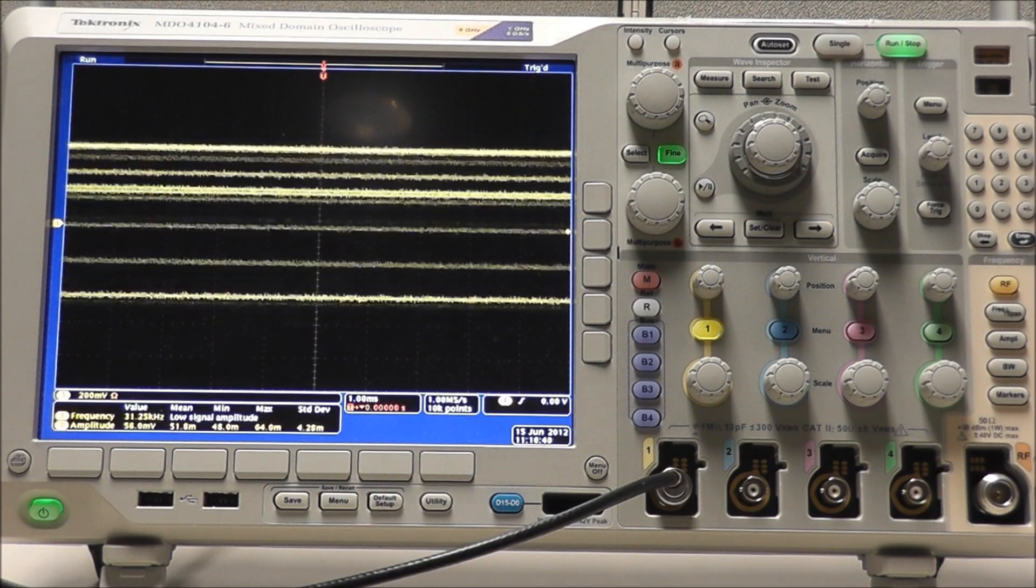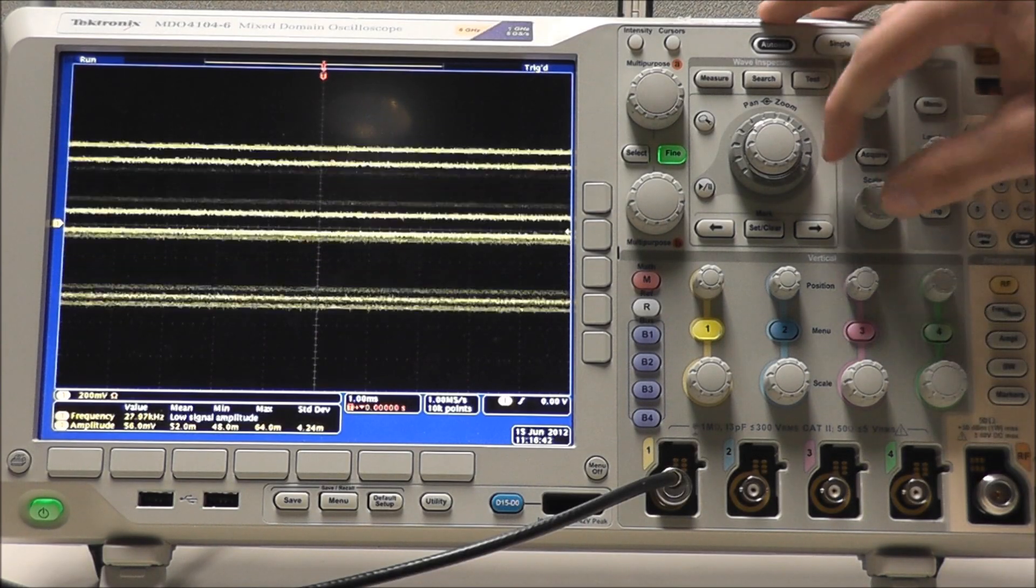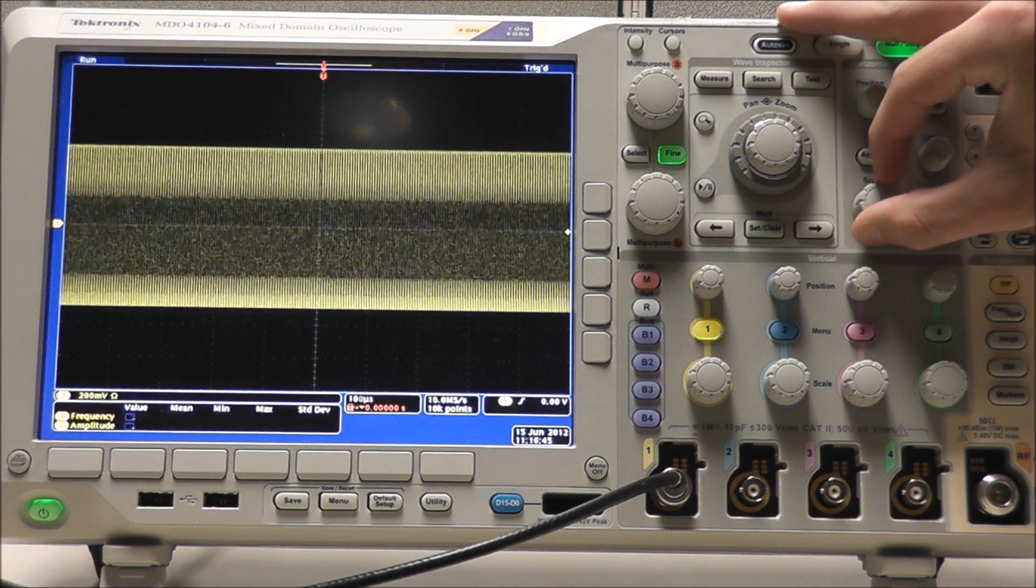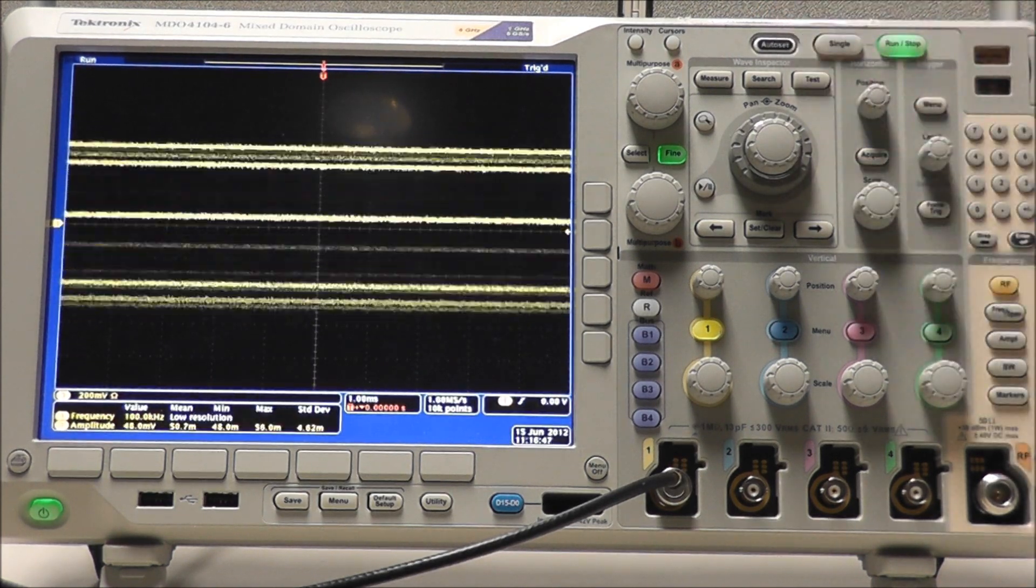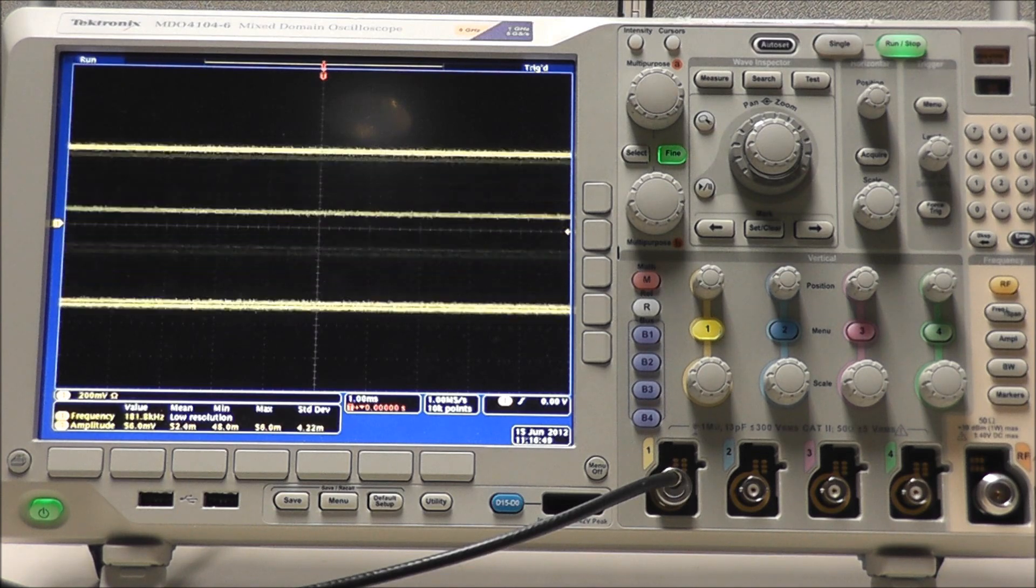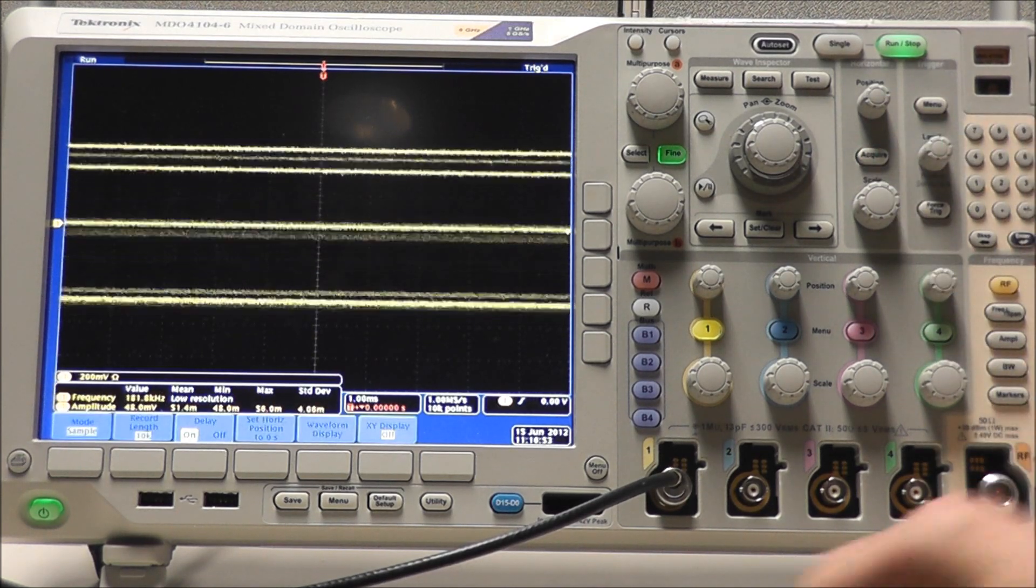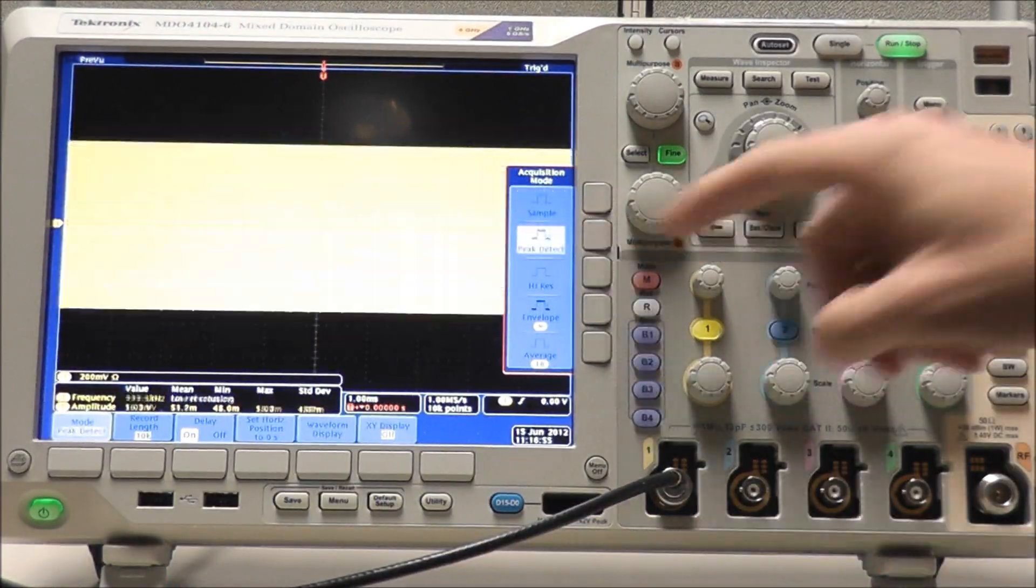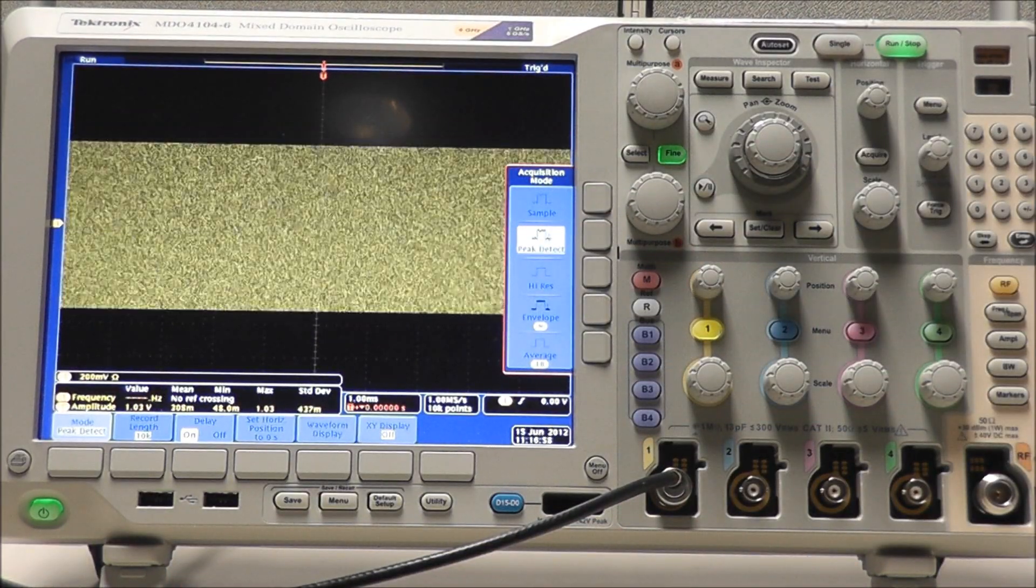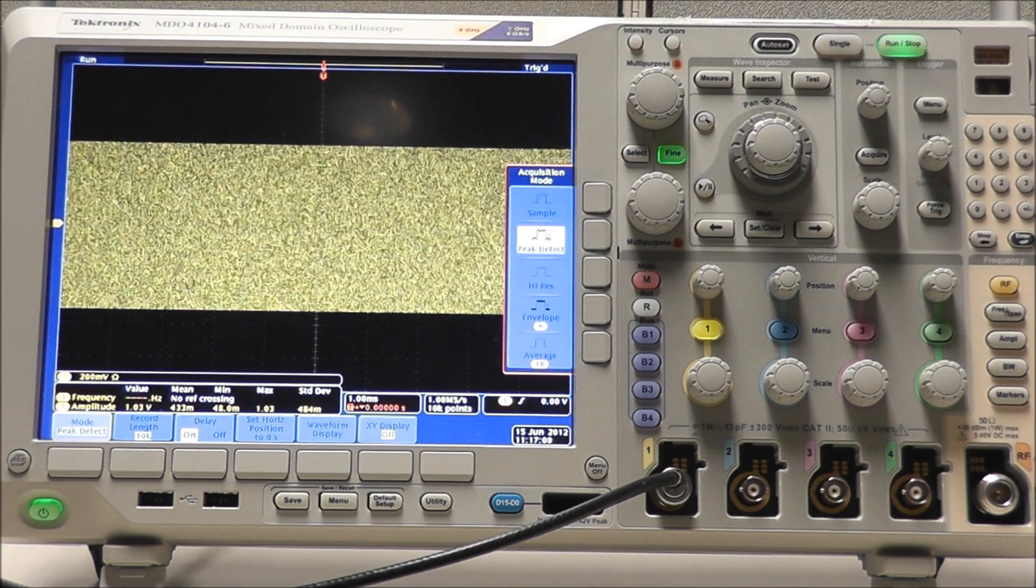There are a couple of ways to check for aliasing. We can perform a horizontal test using the horizontal knob to change the horizontal scale. If the shape of the waveform changes drastically like we see here, we may have aliasing. Or we could perform a peak detect test by selecting acquire, mode, then peak detect. Again, if the waveform changes drastically, we may have aliasing.